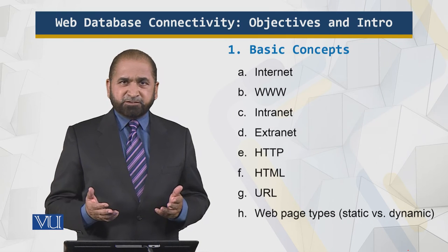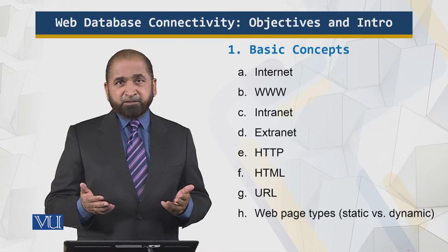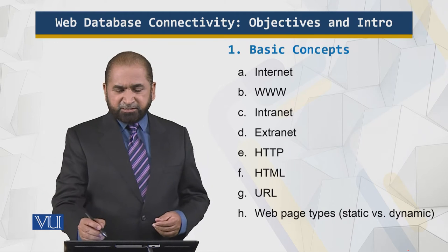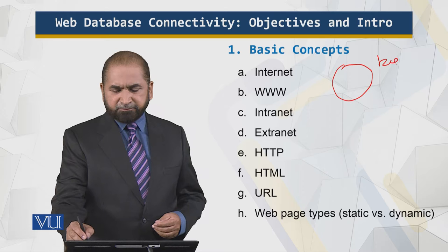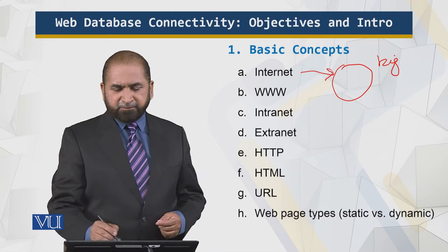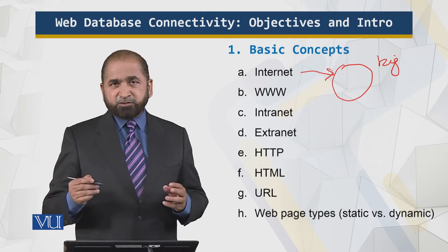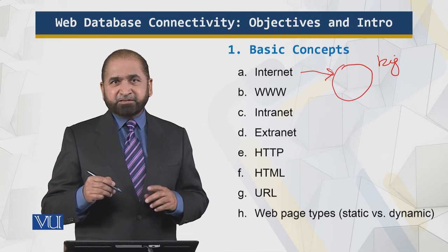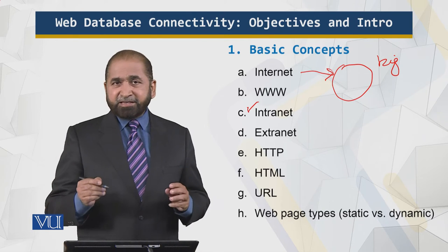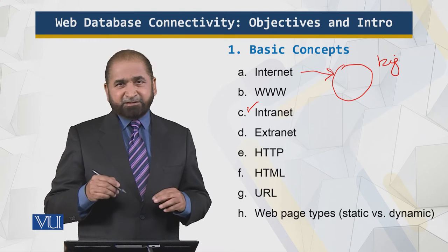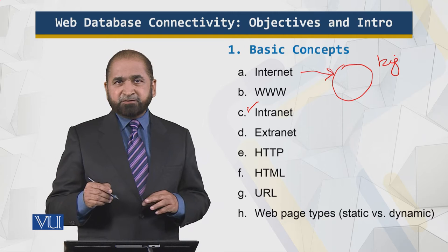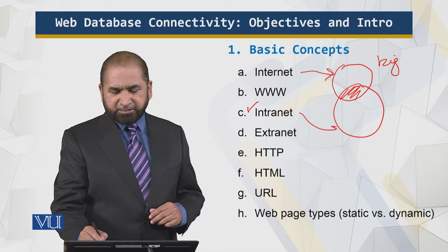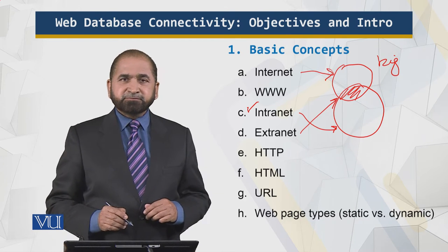These are the basic concepts. Everybody usually knows what the internet is, what the web is, and what intranet and extranet are. An intranet is a network within an organization which is accessible to the users of that organization. Extranet involves allowing outside traffic from the internet coming into the intranet. Using a Venn diagram: this is the internet, this is the intranet, and this is the extranet.